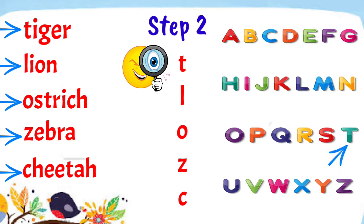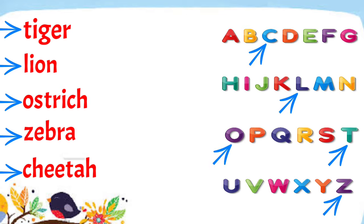Again, we have T, L, O, Z, and C. Among the letters, C comes first. So we have to put Cheetah first.